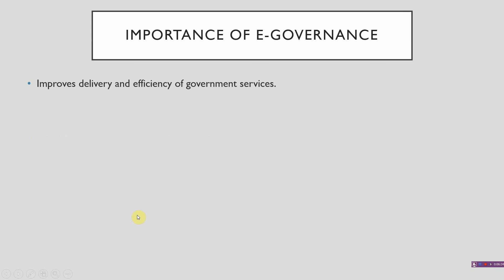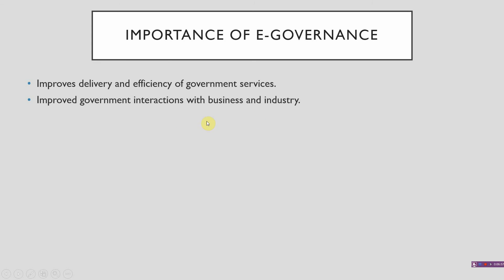Now let us see the importance of e-governance. The first is it improves delivery and efficiency of government services — if everything is done on an online basis, the delivery of information and services is improved as it is quick and saves time. Next comes improved government interactions with business and industry — there is no delay now. One can easily interact with businesses and industries through the online portal, that is MCA, which we will see in the next lectures.